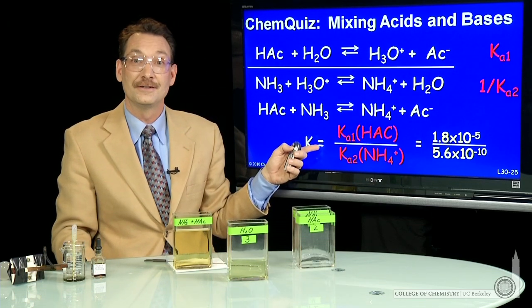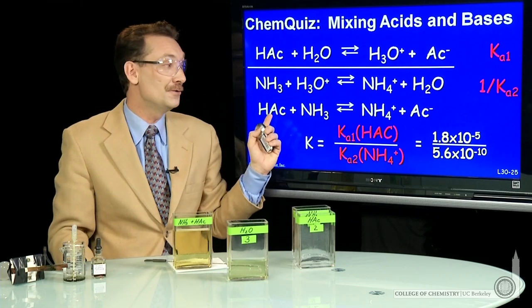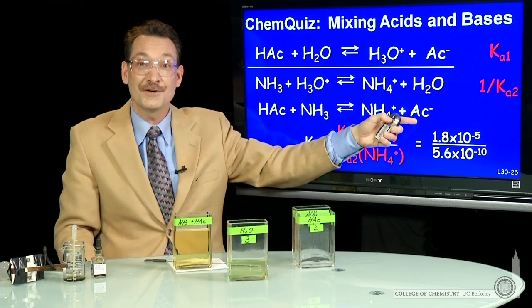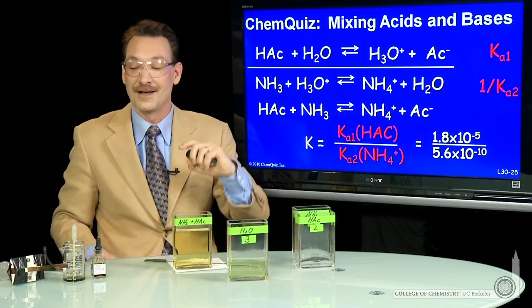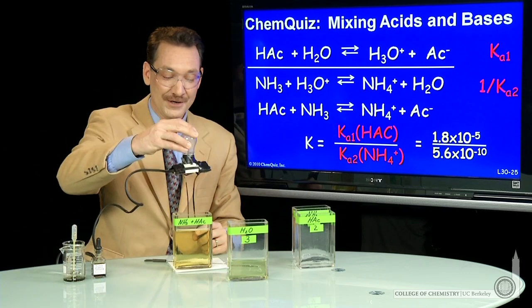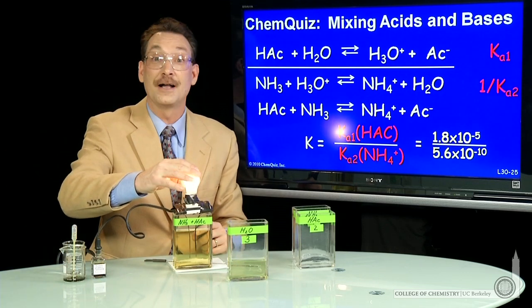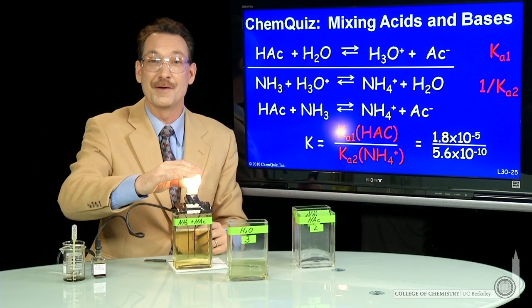This K is very large. So when you mix these two, the reaction favors the products and forms a lot of ions. And indeed, I see favoring the products a lot of ions in solution and a very bright light.